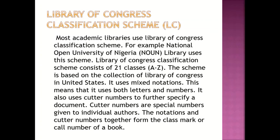Now let's look at the Library of Congress Classification Scheme. This scheme is the most popularly used scheme around the globe, and it is basically used by academic libraries. For example, the National Open University of Nigeria Library uses this particular scheme. The Library of Congress Classification Scheme consists of 21 classes, A to Z.